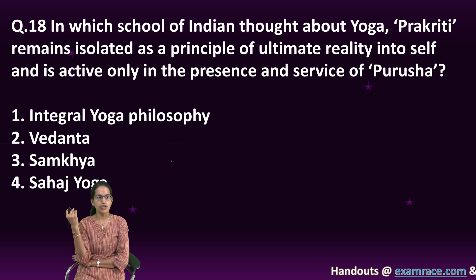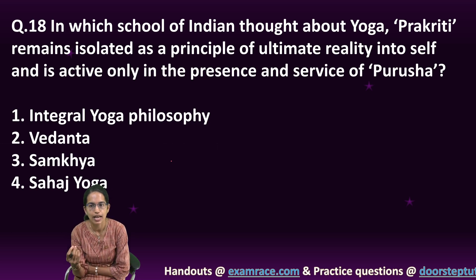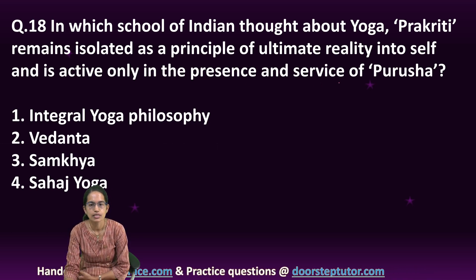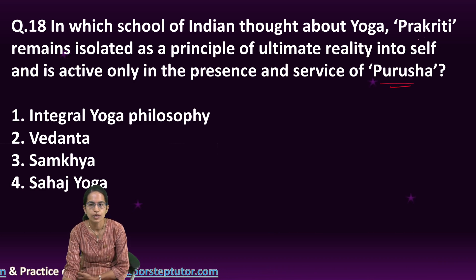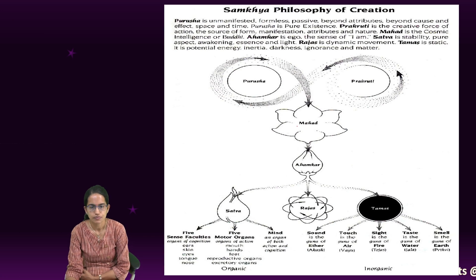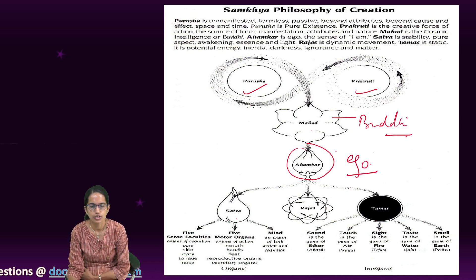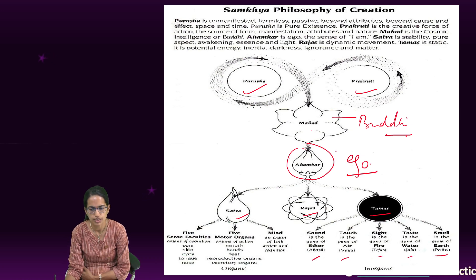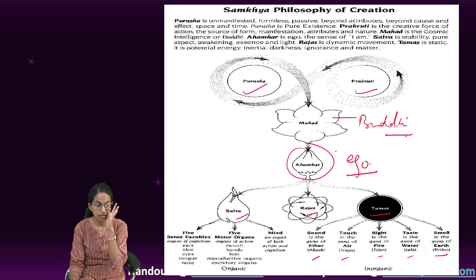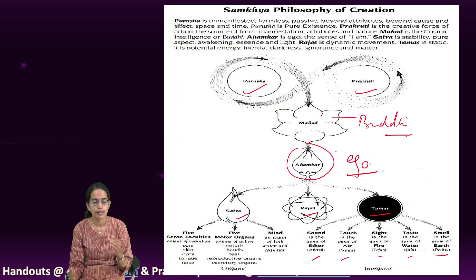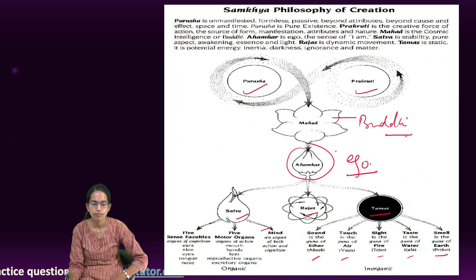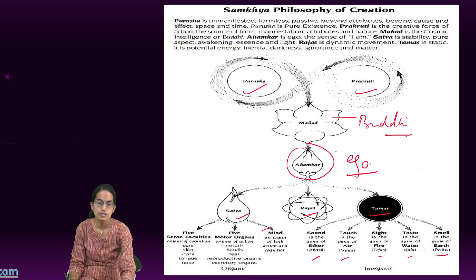In the Sankhya school of Indian thought, Prakriti remains isolated as a principle of ultimate reality and exists only in the presence and service of Purush. In Sankhya, from Ahankar we have Mahat — the cosmic energy or Buddhi — and then Purush and Prakriti. Ahankar is the ego, which gives rise to Sattva, Rajas, and Tamas. Tamas includes the elements Akash, Vayu, Tejas, Jal, and Prithvi. Sattva includes the five sense organs, five motor organs (mouth, hands, feet, excretory organs, reproductive organs), and the mind as an organ of both action and cognition.